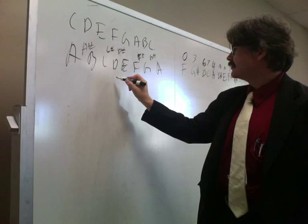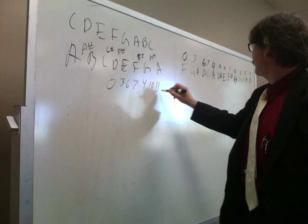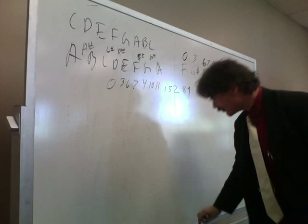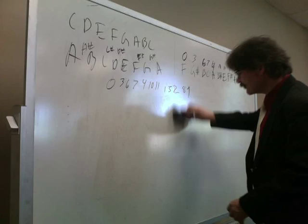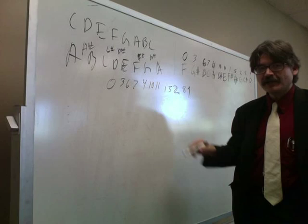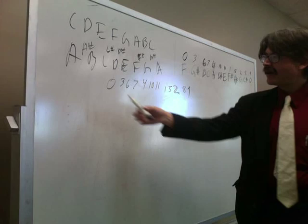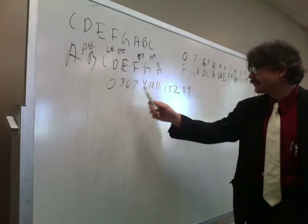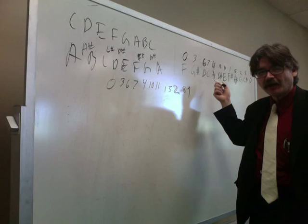So our tone row now is 0, 3, 6, 7, 4, 10, 11, 1, 5, 2, 8, 9. So that's our tone row right now. And so this is our system that we do. Now what I can do is go through here and make my matrix of this. Because you can make a serial piece with just this alone here. You have basically the basic row here. You have the retrograde of this as well. So I can go backwards.